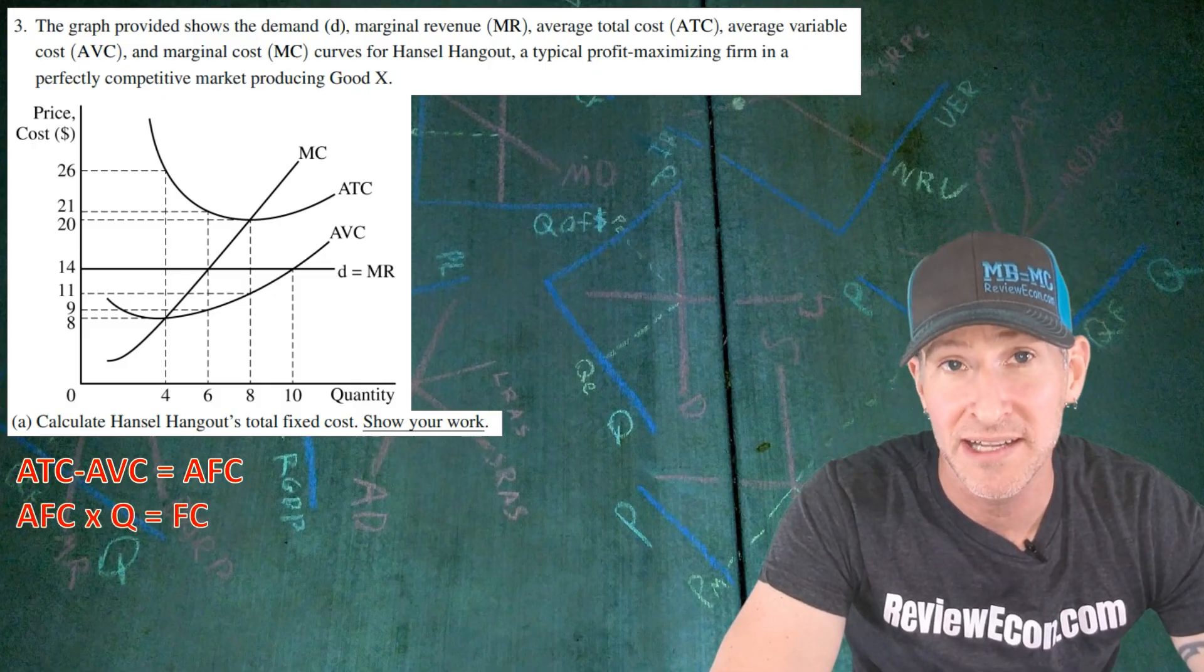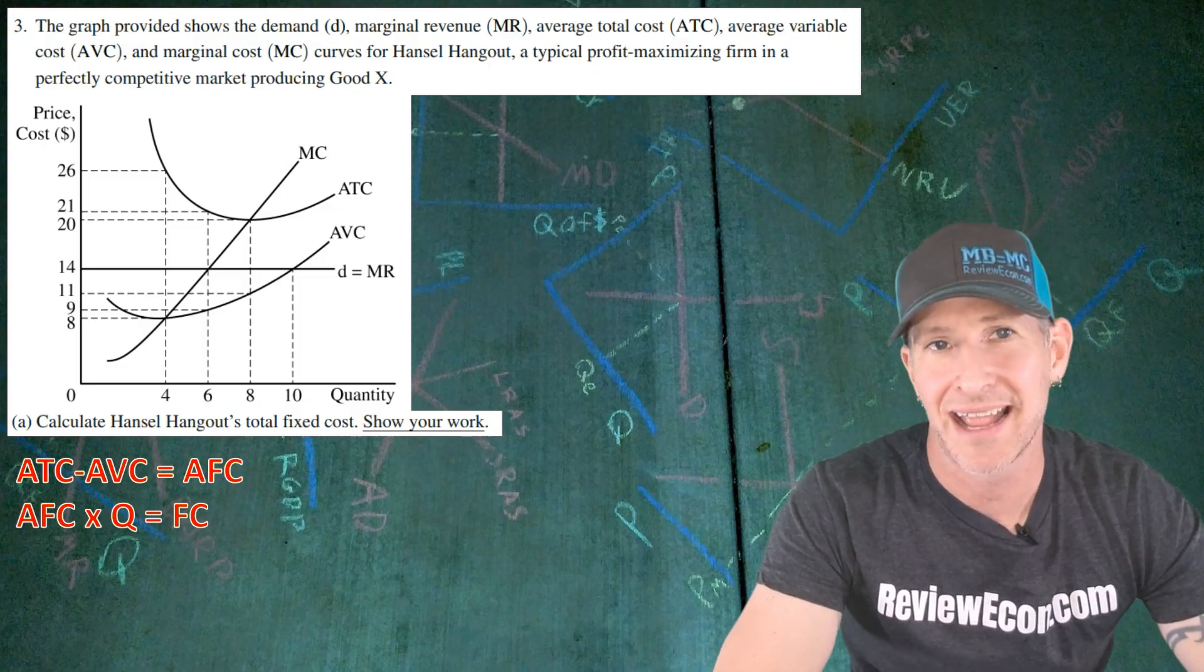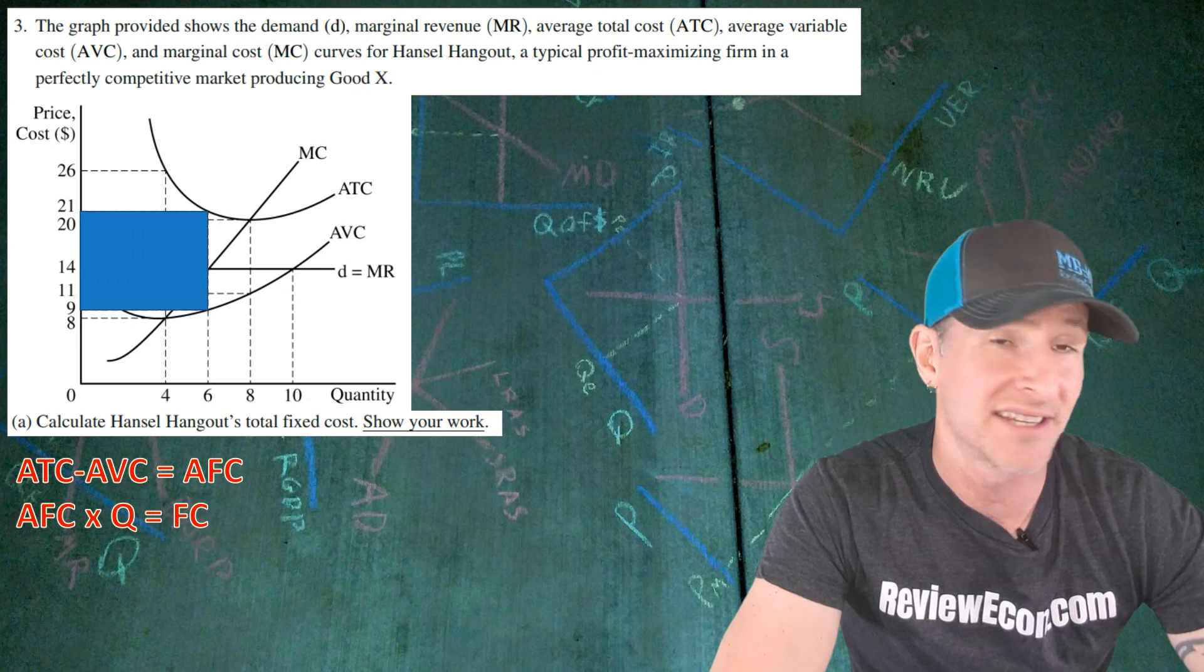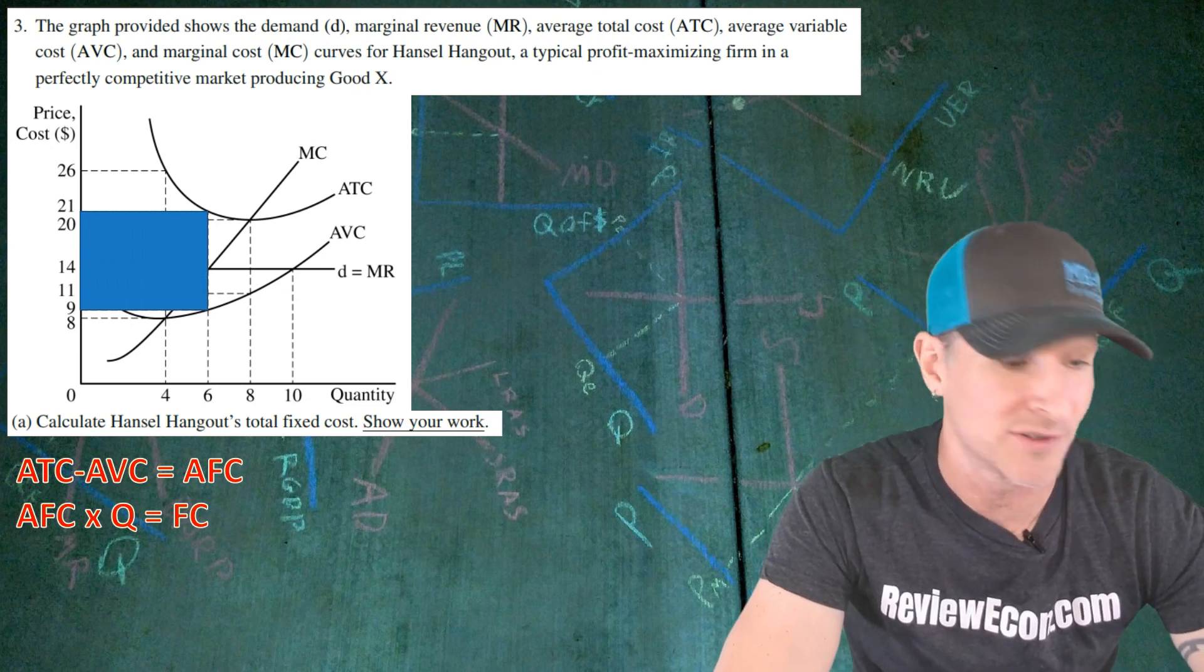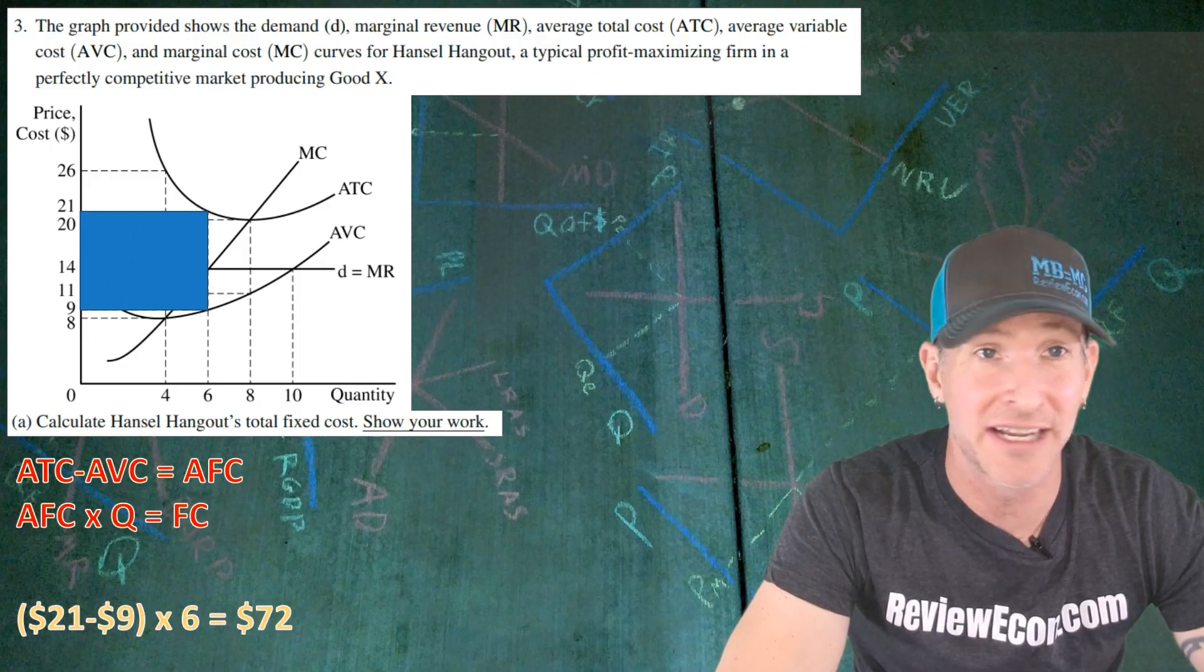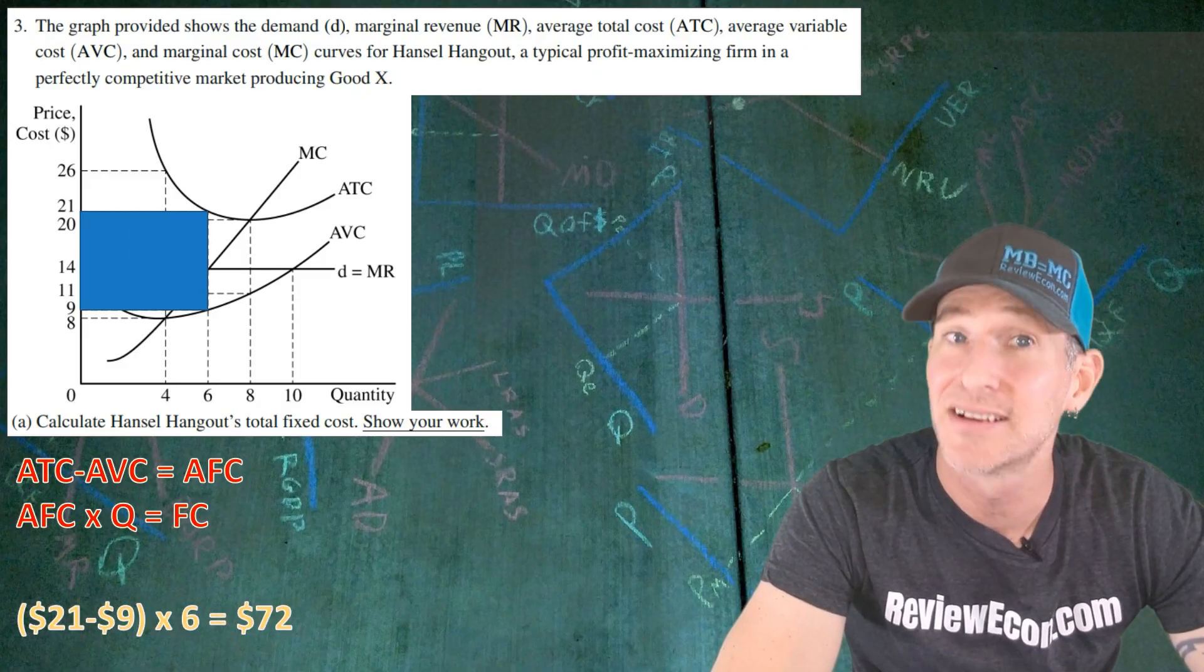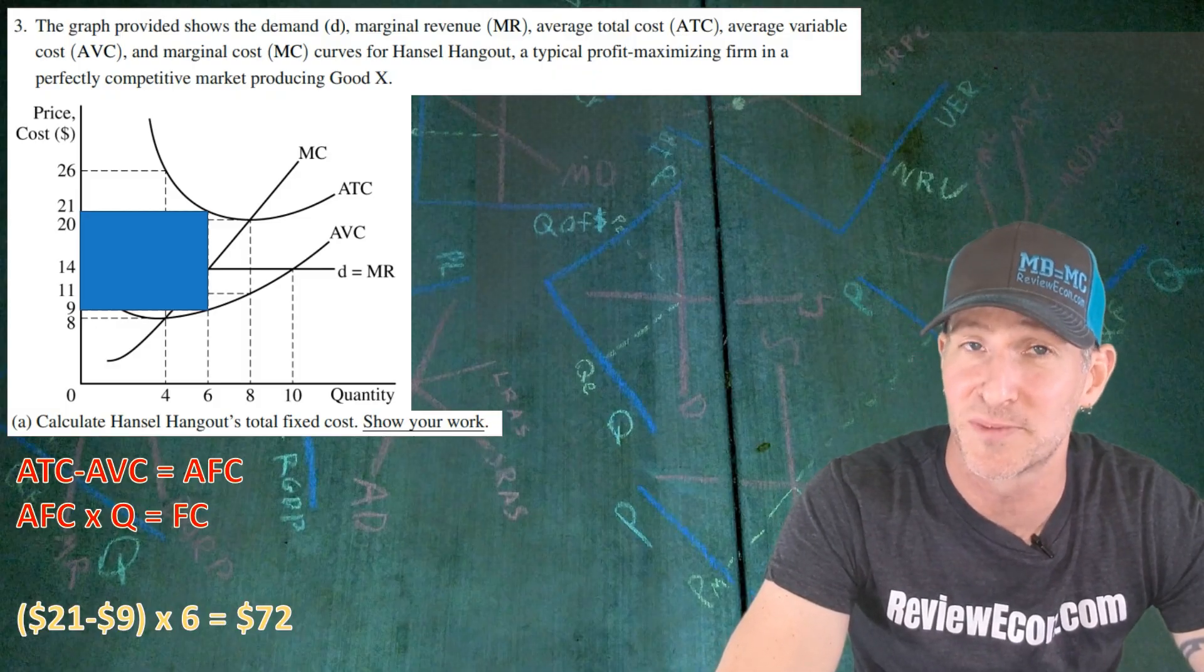On this graph, you can do this at the quantity of six, eight, or four. Any of them will get you the same answer. I'm picking the quantity of six right there. Essentially, I'm going to be calculating the area of that rectangle right there. And calculating the area there gives us $21 minus $9 times six units, $72 of total fixed cost. And if you have it properly calculated, you get your first point.